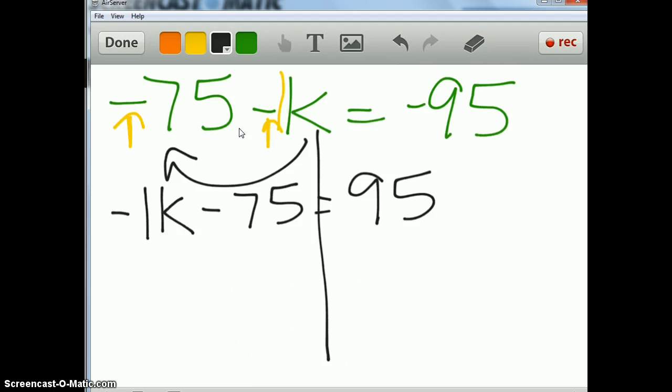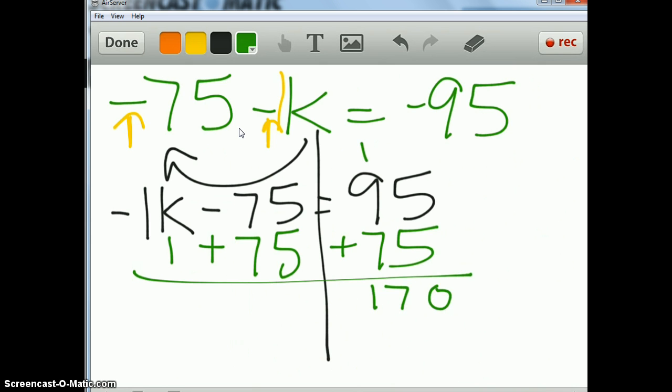So, I'm going to undo the 75 first. How do you undo minus 75? You add. So now, I'm adding that. So, 0, carry my 1, 170. Drop down my negative 1k equals, am I done yet? No, I've got to get rid of this. Times negative 1, divide by negative 1. There you go. So, k equals negative 170.